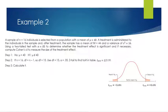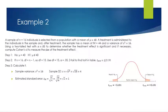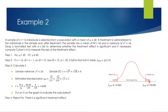Step three: calculate your t-score. The sample variance is given as 16, so the sample standard deviation is 4. Using the estimated standard error equation — square root of s squared over n — you get 1. Then t equals m minus mu over estimated standard error: 44 minus 40 over 1 gives t equals 4. You reject the null — there is a significant treatment effect. Cohen's d equals m minus mu over s: 44 minus 40 over 4 gives d equals 1, a very large effect size.